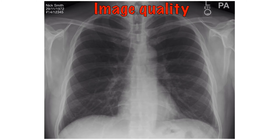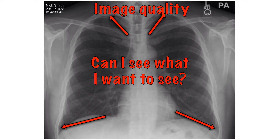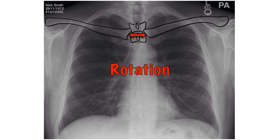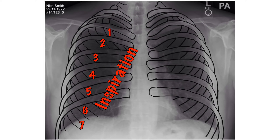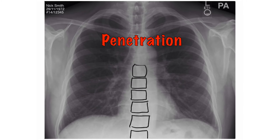In terms of image quality, ask yourself if you can see everything you need to in the picture. Then check three aspects using the mnemonic RIP. R is rotation — the spinous process should be at the midpoint between the medial ends of the clavicles. I is inspiration — there should be five to seven ribs visible anteriorly. P is penetration — the degree to which x-rays have passed through the body. Is the spine visible behind the heart?